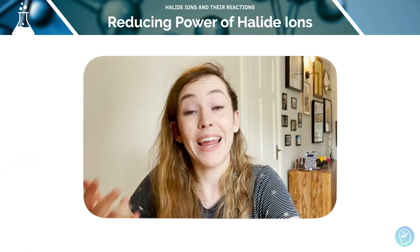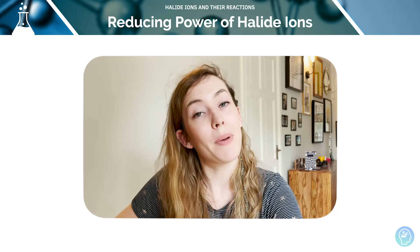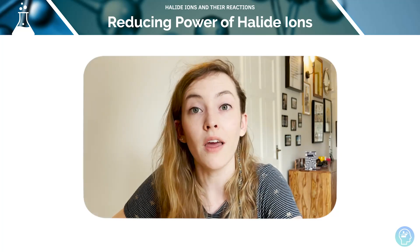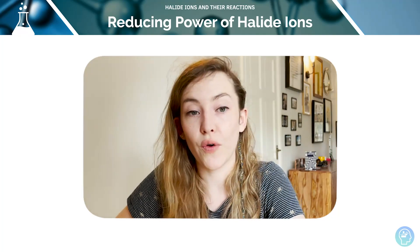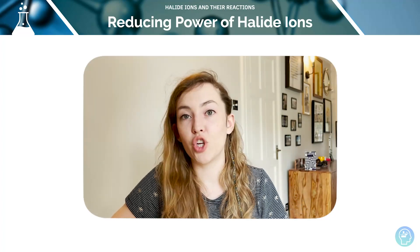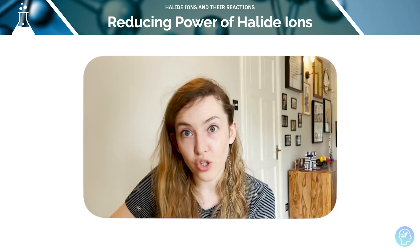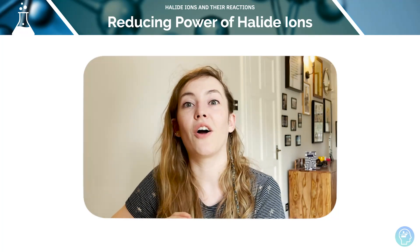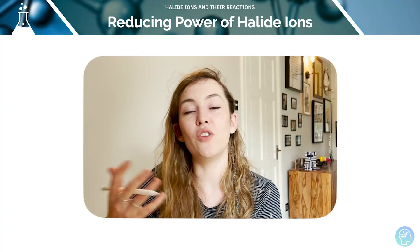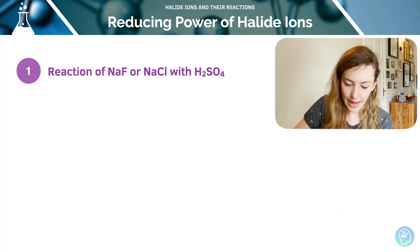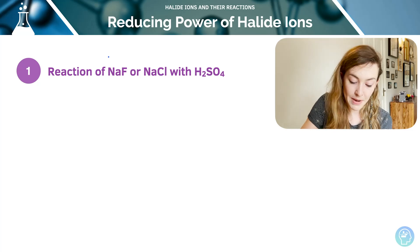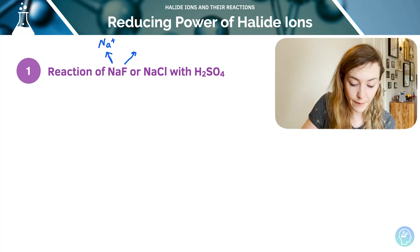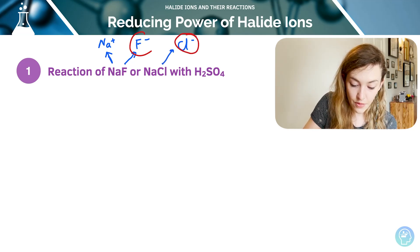The reaction of halide ions with sulfuric acid can be used to qualitatively compare their reducing power. When we react halide ions with concentrated sulfuric acid, a hydrogen halide is produced as an initial product. We can put a salt such as sodium fluoride or sodium chloride — these dissociate into the sodium ion, which does nothing, and the halide ion.